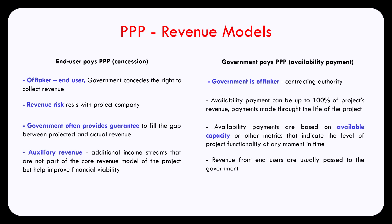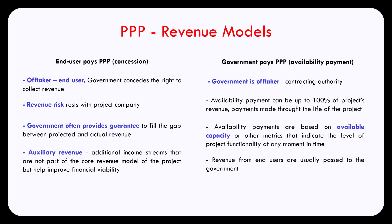As mentioned earlier, it's very rare today to see a pure end-user pays or government pays model. Typically, we see a mixture of models where the government may combine a concession agreement with an availability payment, or a concession agreement with co-financing, or any other arrangement that the government considers beneficial for the project. We'll see you next time.